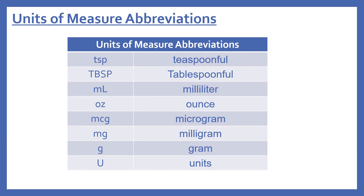Now we'll look at some units of measure abbreviations. TSP means a teaspoonful, TBSP means tablespoonful, ML is milliliter, OZ is ounce, MCG is microgram, MG is milligram, G is gram, and U is units — you see this sometimes with insulin.